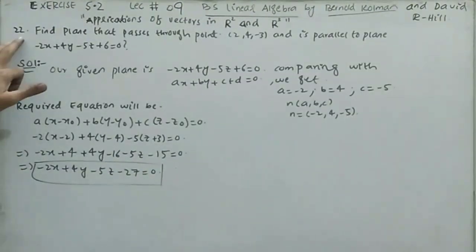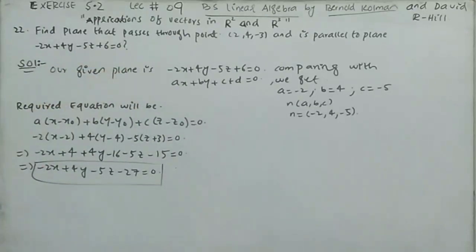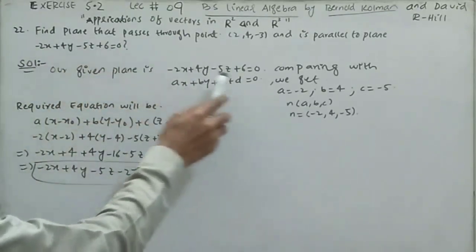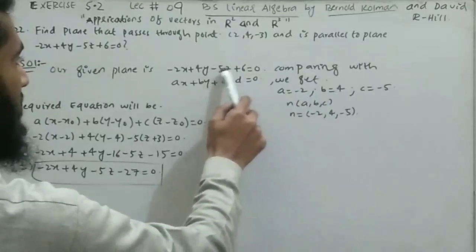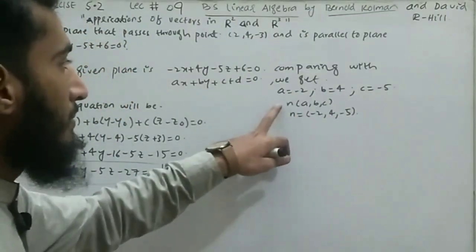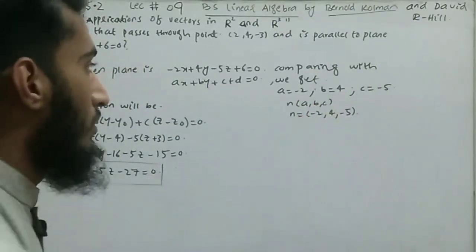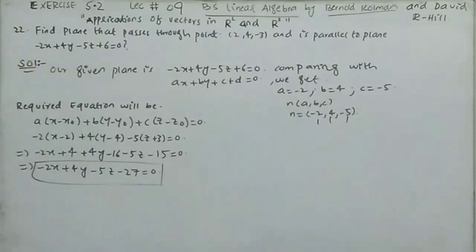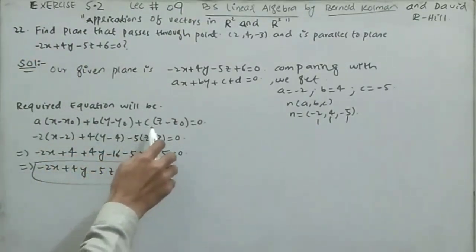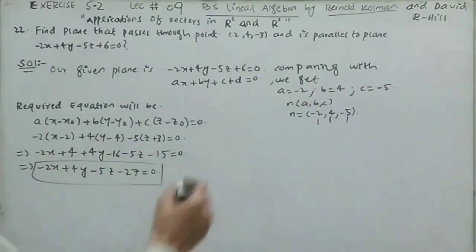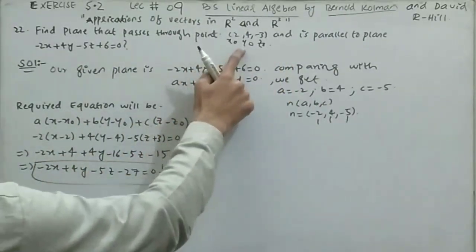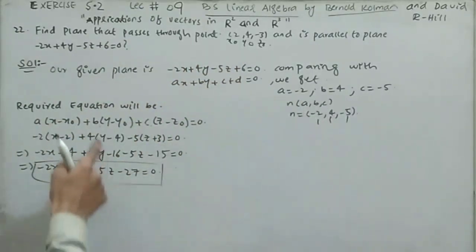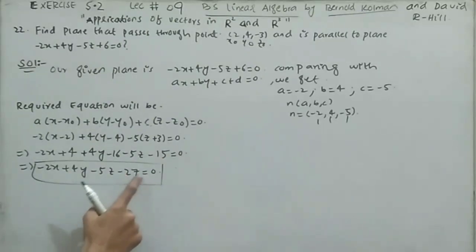Question 22: find the plane that passes through the point (2, 4, -3) and is parallel to the plane -2x + 4y - 5z + 6 = 0. Comparing with ax + by + cz + d = 0 gives a = -2, b = 4, c = -5. The normal vector n = (-2, 4, -5). Using a(x - x₀) + b(y - y₀) + c(z - z₀) = 0 with point (2, 4, -3) and the normal, the required equation is -2x + 4y - 5z - 27 = 0.